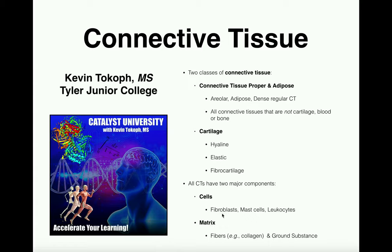The cells are just different kinds of cells that lie in that particular tissue. Common cells we'll see will be fibroblasts, mast cells, and leukocytes, which are white blood cells. Everything outside the cells is the matrix, which consists of fibers and ground substance. Ground substance is really just the medium in which everything sits, and fibers are strands of proteins such as collagen. We'll also see elastin as well.